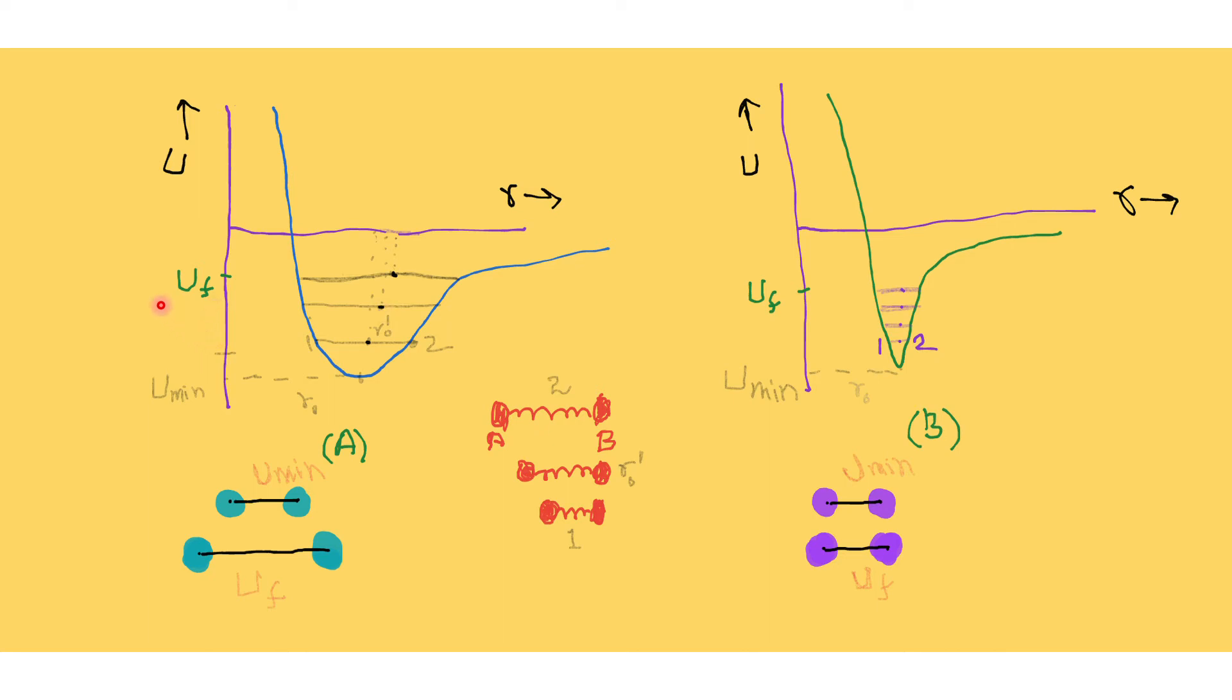Similarly again if we heat it to the final temperature which is known as U_f, final energy, at that temperature again the scenario is changed and the distance between these two atoms is increased and this r_naught dash is shifted towards this edge. We can see that we started from here r_naught and it is moving towards the right direction.